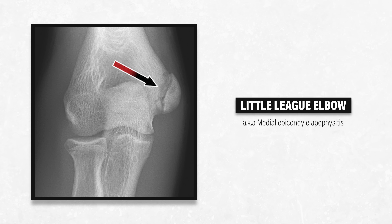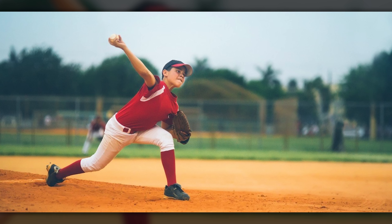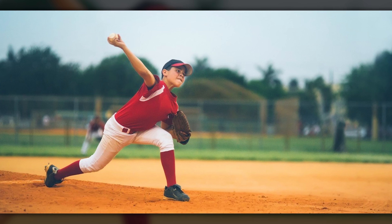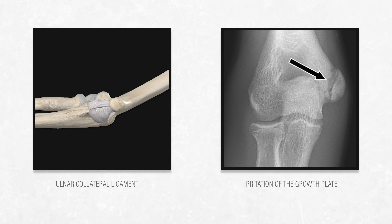Little league elbow, or medial epicondyle apophysitis, affects youth overhead athletes. As the name implies, it's common in young baseball pitchers. It's an overuse type injury in which the soft tissue structures that attach to the medial epicondyle, like the ulnar collateral ligament, cause irritation of the growth plate due to repetitive tensioning of the area.